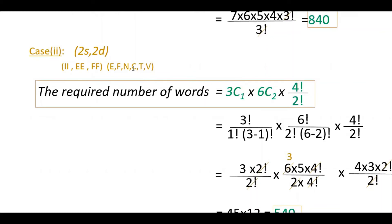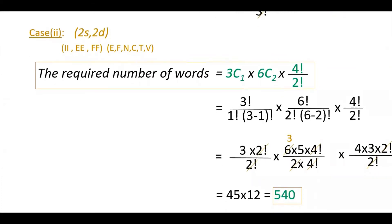For Case 2, E appears three times but you can take two E's, so it still counts as one group. After choosing one group from the three, the remaining different letters are six. Choose two different letters from six: 6C2. Multiply by permutations with two repeating letters: 4!/2!. The required number of words is 3C1 × 6C2 × 4!/2! = 540.